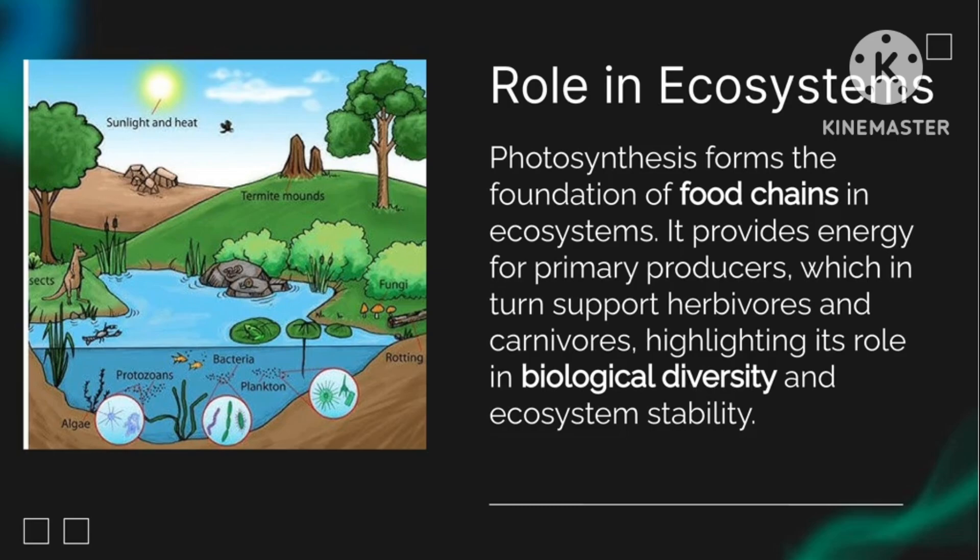The role in ecosystems. Photosynthesis forms the foundation of food chains in the ecosystem. It provides energy for primary producers, which in turn support herbivores and carnivores, highlighting its role in biological diversity and ecosystem stability.